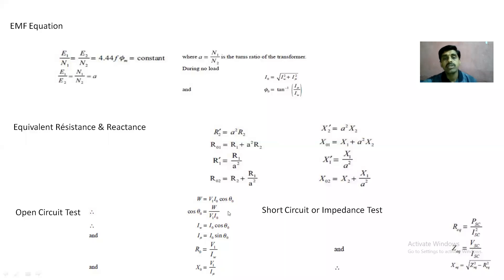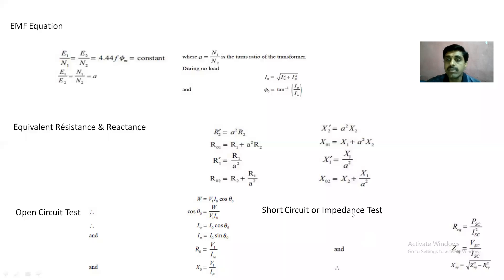From the open circuit test you can calculate R0 and X0. To calculate R0 and X0, we need the voltmeter, ammeter, and wattmeter readings. From those readings we can calculate cos φ0, then IW and Iμ, and from those we get R0 and X0. From the short circuit test you can calculate equivalent reactance and resistance. For that we need the wattmeter reading and the current. From that we can calculate R_eq, and Z_eq can be obtained by Vsc/Isc.